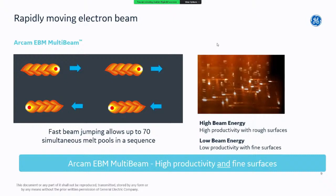In this process we are able to maintain up to 70 melt pools active simultaneously by scanning the beam very fast. This allows you to tailor the amount of energy put into a specific position within the build envelope. Low beam energy lowers productivity but improves surfaces, which is why this is used for contours. For bulk melting, we use a single melt pool where much more energy is concentrated.